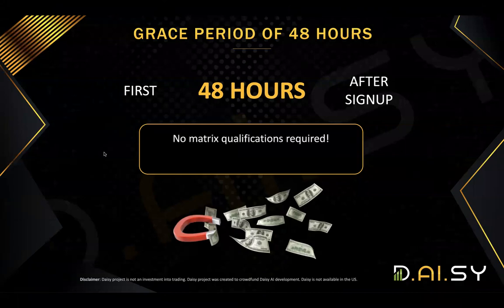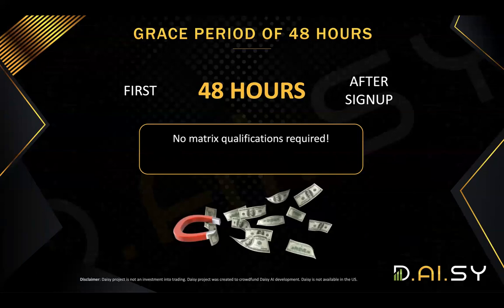There will be a grace period of 48 hours for all new members. After you sign up, you will have 48 hours where no matrix qualifications are required, meaning you can earn from all 10 generations — even if you are only qualified for three or four generations, or even if you're not qualified for any. There's also a special promotion: as soon as DAISY relaunches, which is scheduled for approximately March 19th to 22nd, we will have five days where no matrix qualifications are required, so we will earn from all 10 generations for five days.